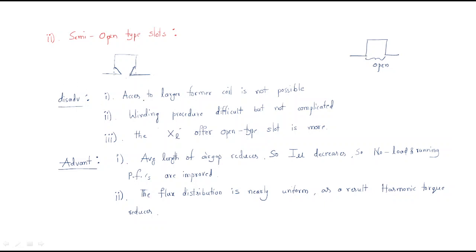First we look at the disadvantages of semi-open slots. Access to large former coil is not possible. If you want to increase the number of coils, a large number of coils is not possible here — only a small number of coils is possible. Next, winding procedure is difficult but not complicated. Whenever there is less space, the winding procedure is somewhat difficult, but there is a difference between difficult and complicated.